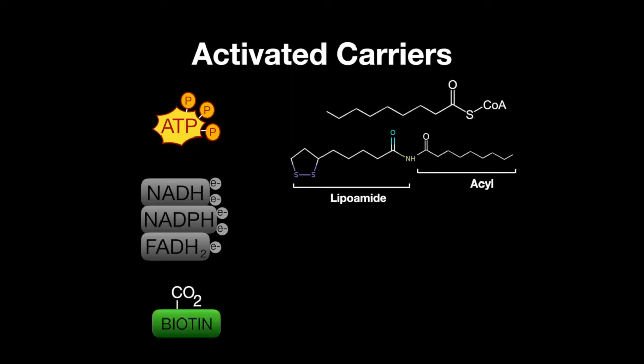Biotin carries carbon dioxide. Tetrahydrofolates carry one-carbon units. S-adenosylmethionine, also called SAM, carries methyl groups. And TPP, or thiamine pyrophosphate, carries aldehydes.